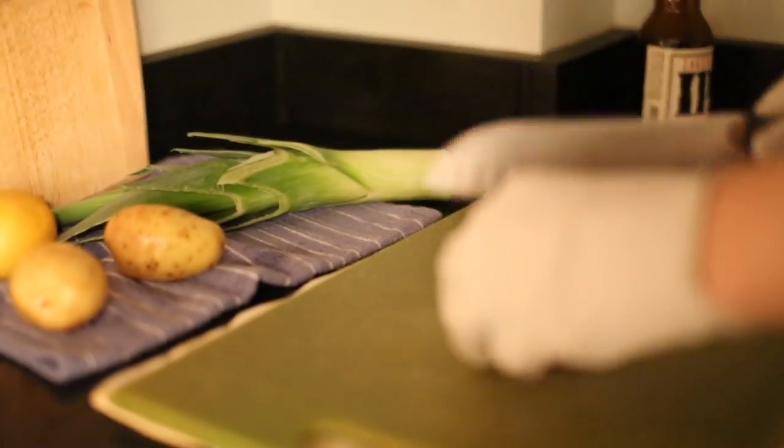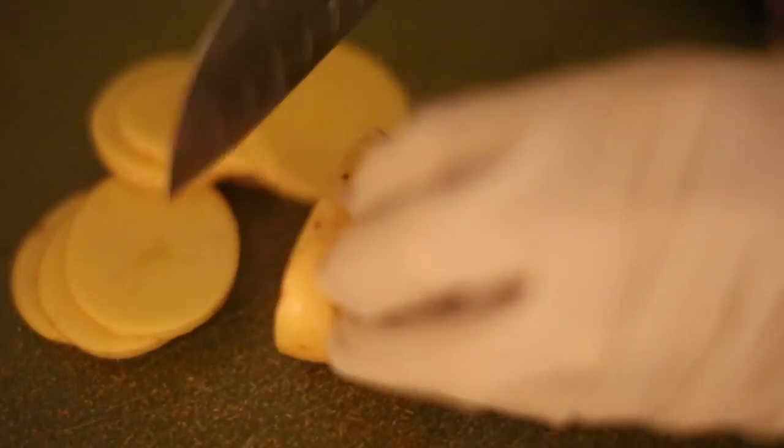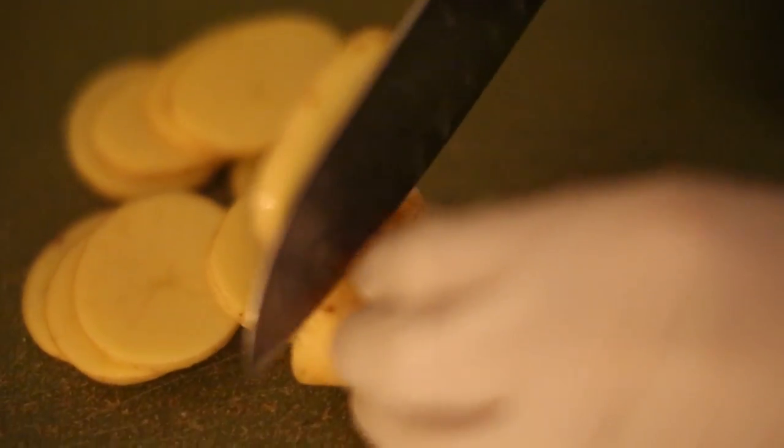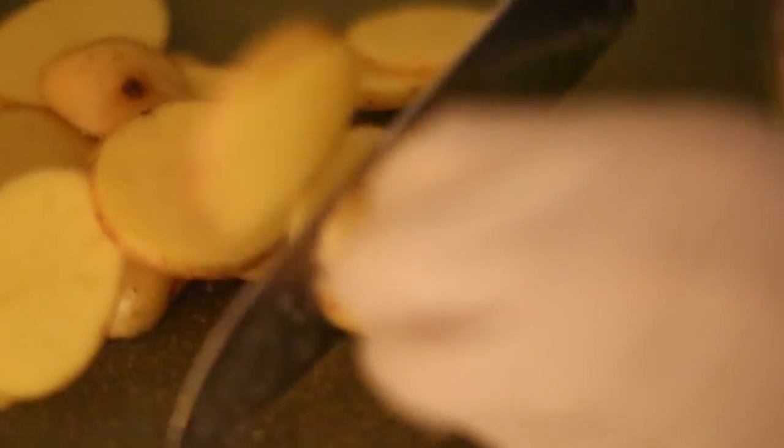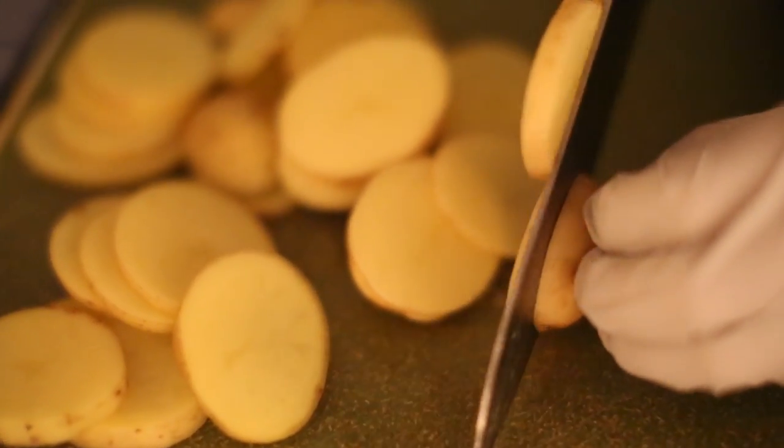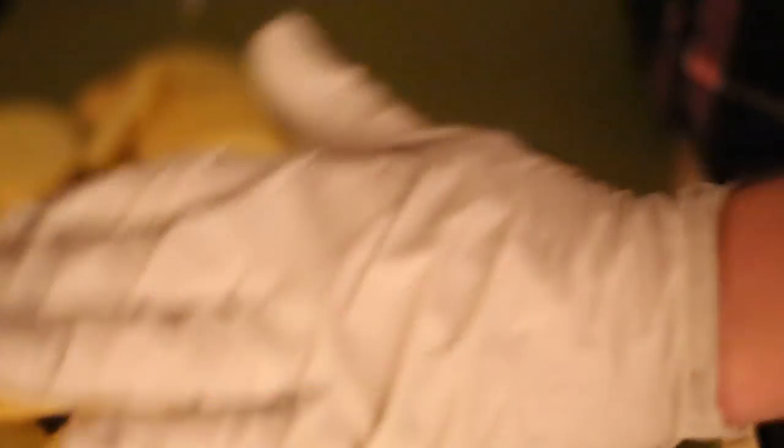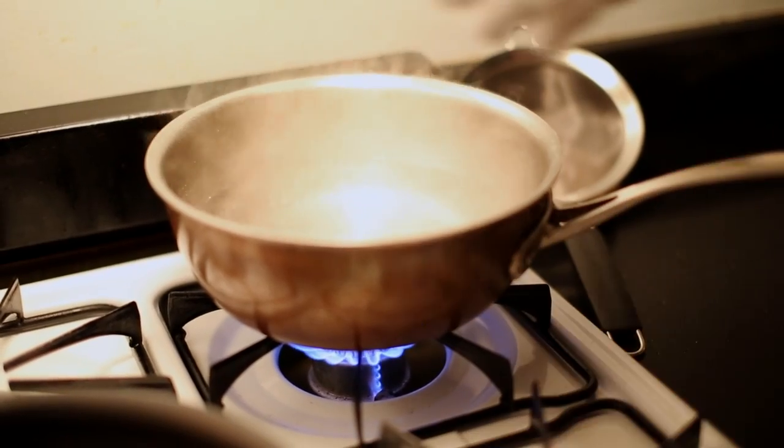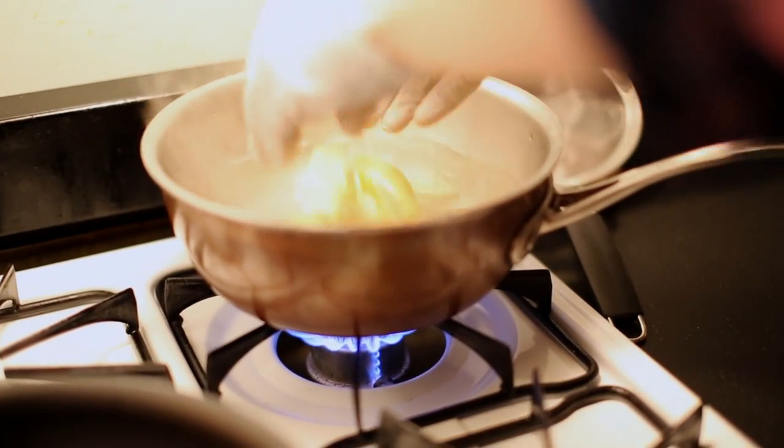So now we're going to slice our potatoes. We want to slice them pretty thin, so we can fit them in our fish bags nicely. Then put the potatoes into the boiling water for about five to seven minutes.